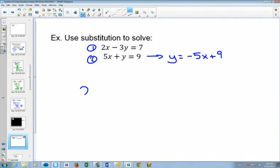So then we take our first equation and rewrite it. But instead of writing Y, we write negative 5X plus 9, because that's what Y is equal to.